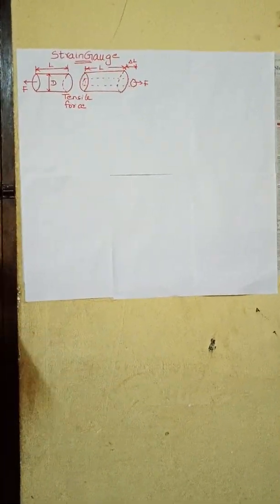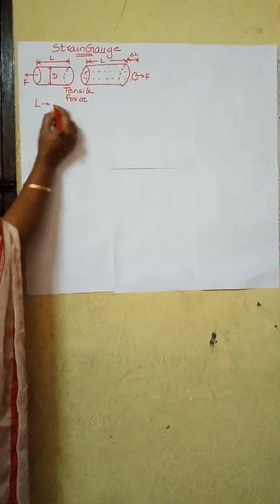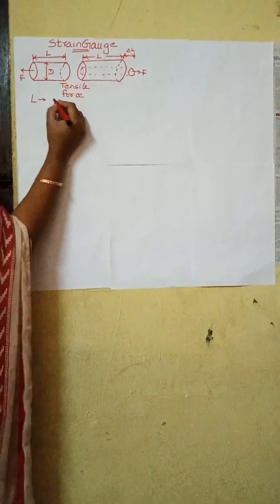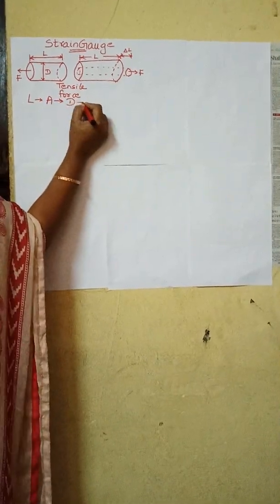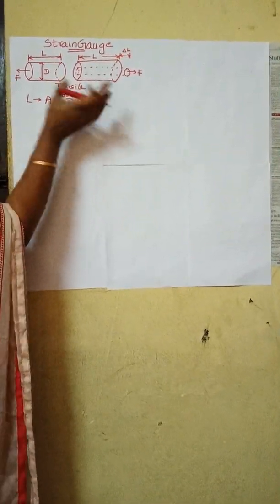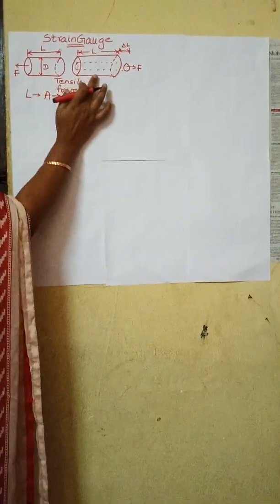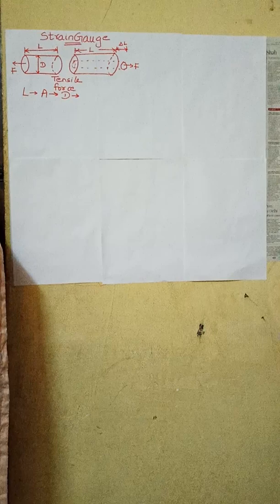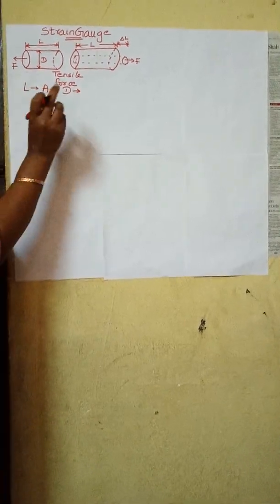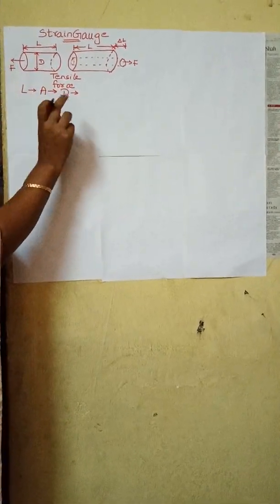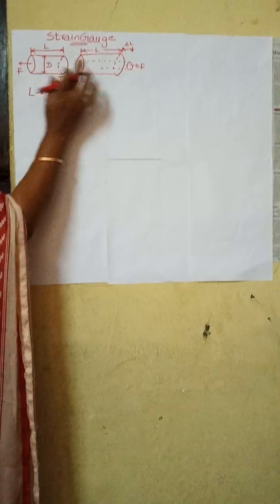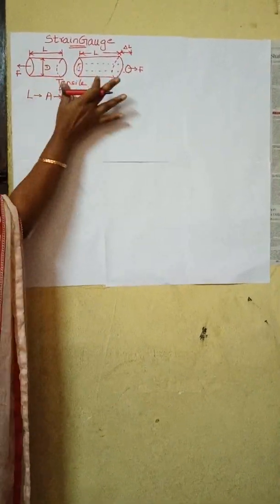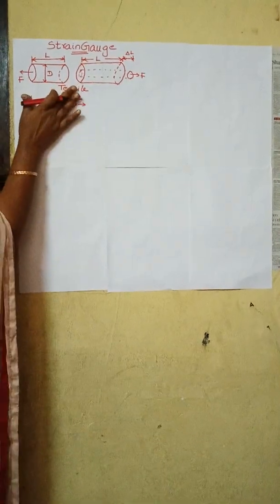Now we have a derivation of a strain gauge. Let L be the length of the conductor, A be the area of cross section, and D be the diameter of the gauge before being strained. The material of the wire has a resistivity. Let us take a tensile stress denoted as S that we apply to the wire. This produces a positive strain causing the length to increase and the area to decrease as shown in the figure.